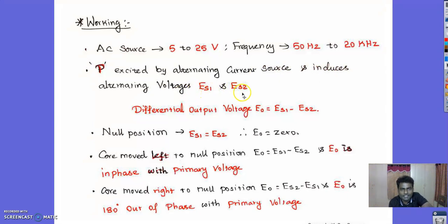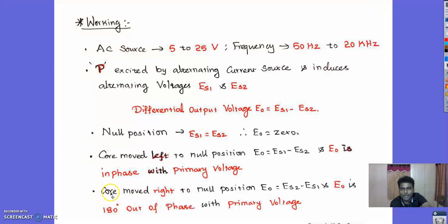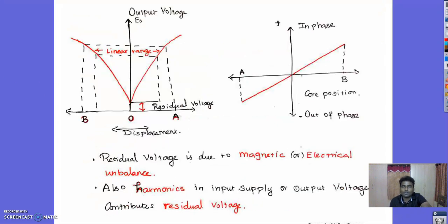Since it is a differential transformer, it produces a differential output voltage E0 = ES1 − ES2. At the null position — when the core is at the center — ES1 equals ES2, so E0 = 0. When the core is moved to the left of the null position, E0 = ES1 − ES2 and is in phase with the primary voltage (positive). When the core is moved to the right of the null position, E0 = ES2 − ES1, meaning ES2 is greater than ES1, so E0 is 180° out of phase with the primary voltage.